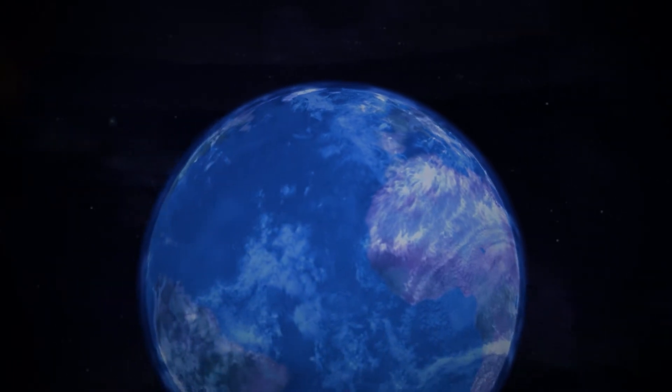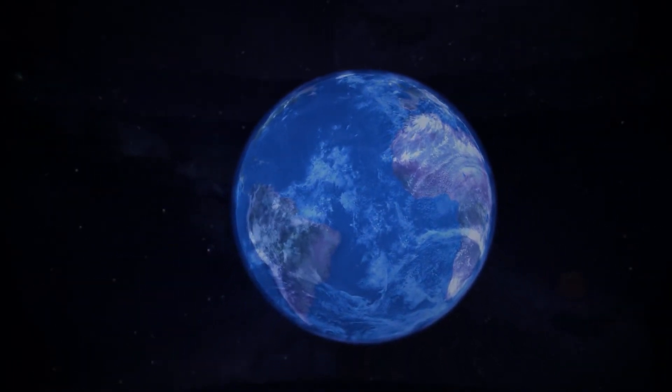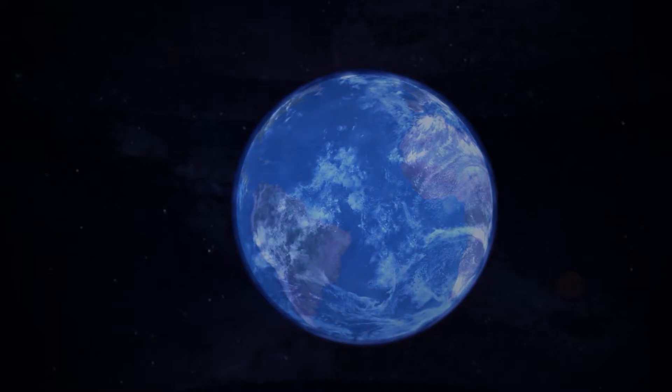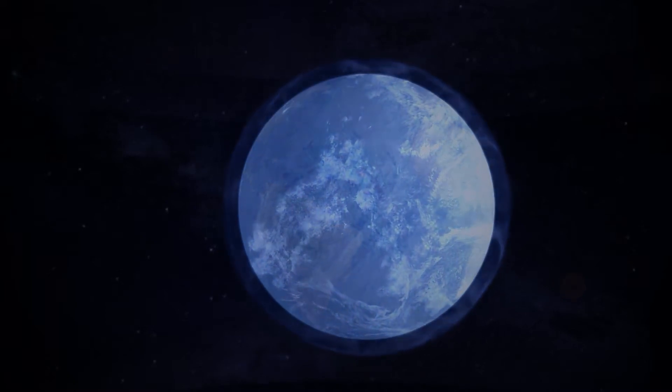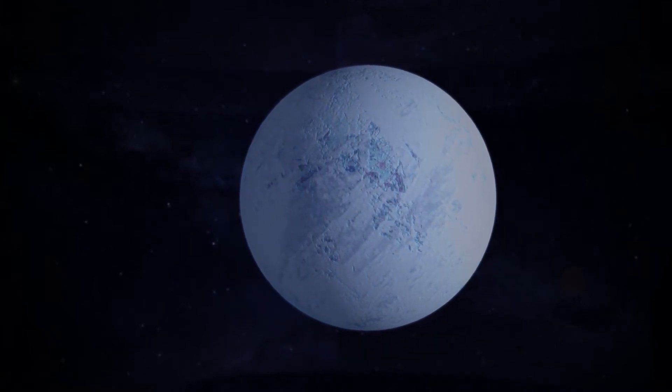If the Earth were the size of an apple, the atmosphere would be just as thick as the apple skin. Without this tiny, fragile-looking belt, our planet would be too cold to support higher life.